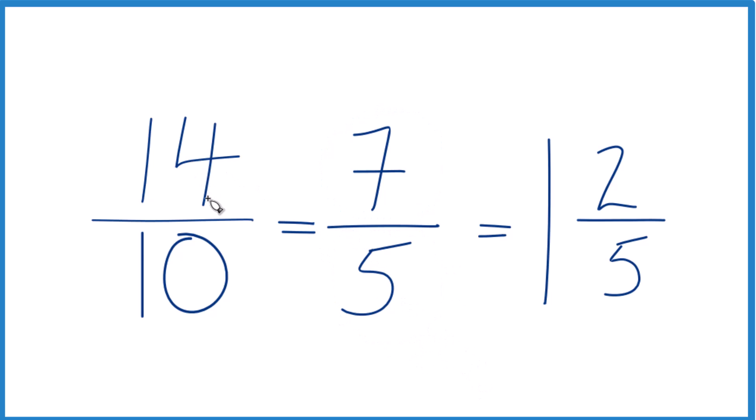So in answer to our question, when we simplify 14/10, we get 7/5, and we could also write that as a mixed number, 1 and 2/5, and all of these have the same value, just different ways to write it.